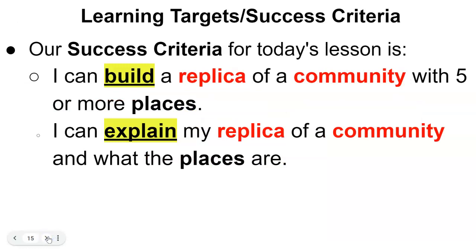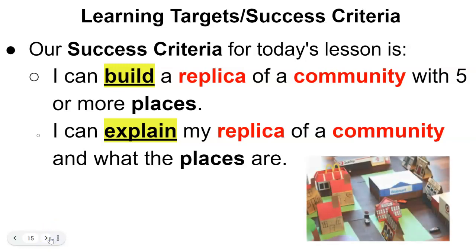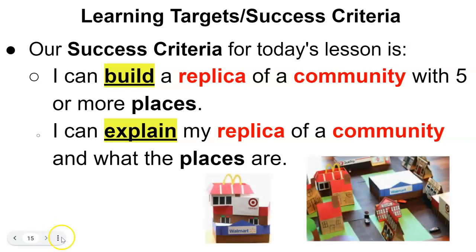Our success criteria for today's lesson is: I can build a replica of a community with five or more places, and I can explain my replica of a community and what the places are. I'm going to choose what I want to build my community out of, what places I'm going to put in my community, and then explain what these places are.